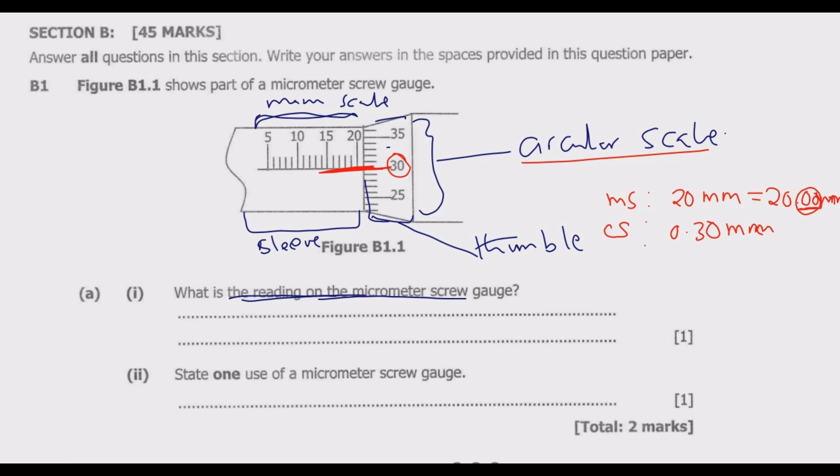Now this point is just to add these two. So what you're going to get is 20.00 plus 0.30 like this. When we add this, we're going to get 20.3 millimeter as the reading on the scale. So you add these two parts, which are the main scale and the circular scale. Once you add those two, you get the reading.